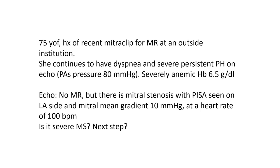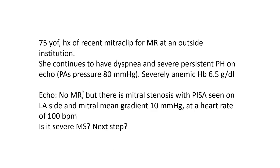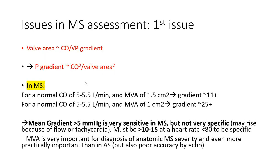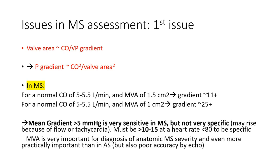My guess is no. This is rather anatomically mild MS that was made hemodynamically severe by having a high flow. As we know from the Hakki and Gorlin equations, the pressure gradient across a stenotic valve is highly dependent on flow — dependent on the square of the flow across it. In a patient who is anemic, the flow is dramatically increased across that valve, causing an anatomically mild MS to become hemodynamically severe. Also, tachycardia very much affects the gradient in MS more than it does in AS. So my guess is this is mild MS with a high flow state becoming hemodynamically severe because of flow conditions.